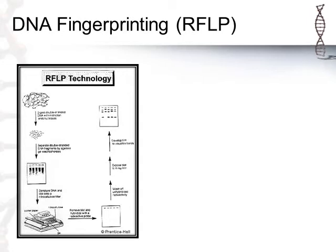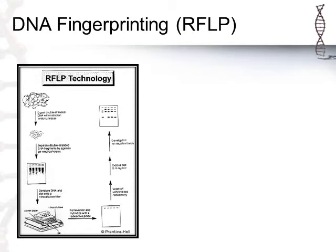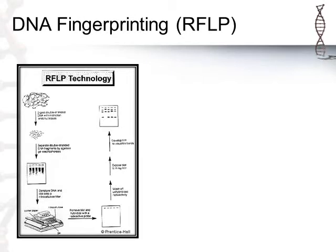Once we have multiple copies of DNA from PCR, we can do lots of things with them. One technique we can use from large samples of DNA is DNA fingerprinting. RFLPs — restriction fragment length polymorphisms — represent the original way of doing DNA fingerprinting. The basic idea is to create a visual fingerprint based on strands of DNA that can be used to eliminate suspects, establish parentage, or similar purposes.